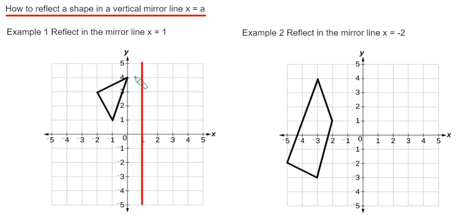So we just need to reflect the shape now in this mirror line. Let's start with the top corner. So the top corner is 1 square to the mirror, so it will be 1 on the other side, let's put a dot there. The bottom corner is 1, 2, 2 squares to the mirror line, so it's 2 on the other side.